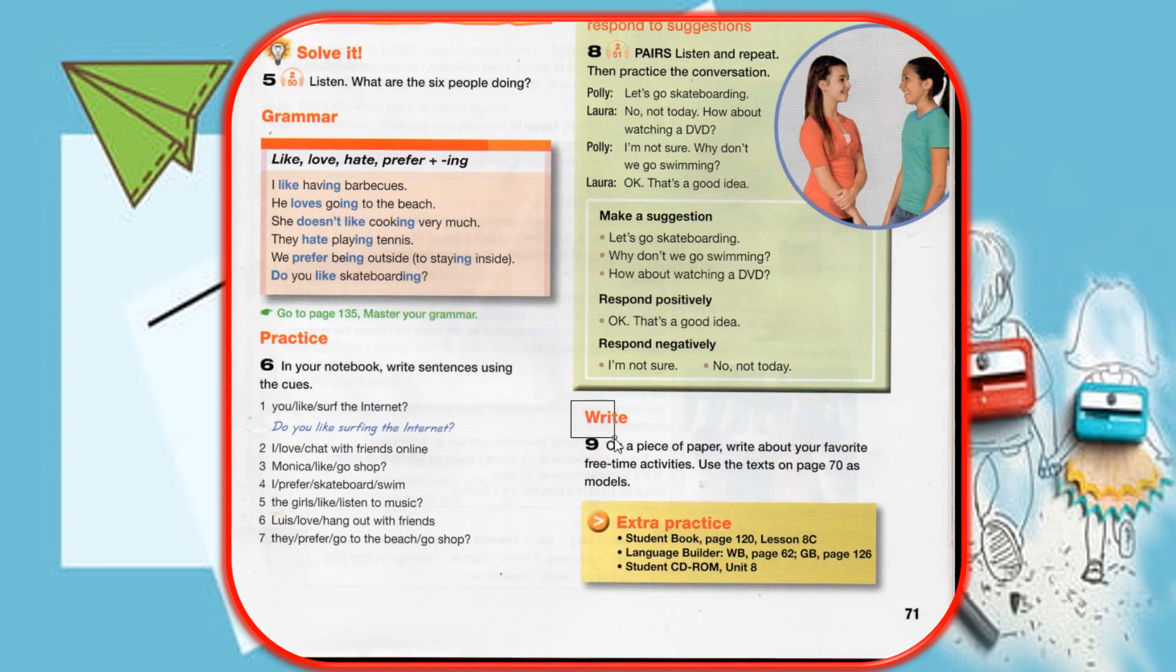The last activity. Write. On a piece of paper, write about your favorite free time activities. Use the text on page 70 as models. You're going to do this also in the worksheet that I will send you.